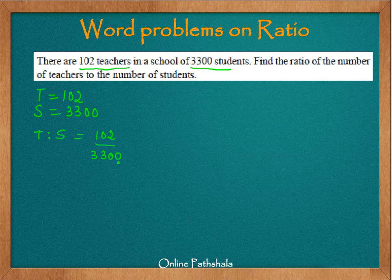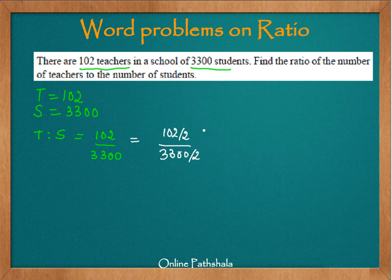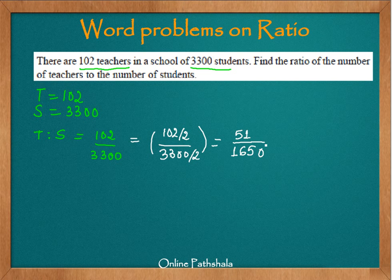We find the smallest number that can divide both numerator and denominator. Since 102 ends in 2 and 3,300 ends in 0, both are divisible by 2 — using divisibility tests from the chapter on playing with numbers. Dividing both by 2: 102 divided by 2 gives 51, and 3,300 divided by 2 gives 1,650. We check whether we can reduce further. The last digits are 1 and 0, so we cannot divide by 2 again.